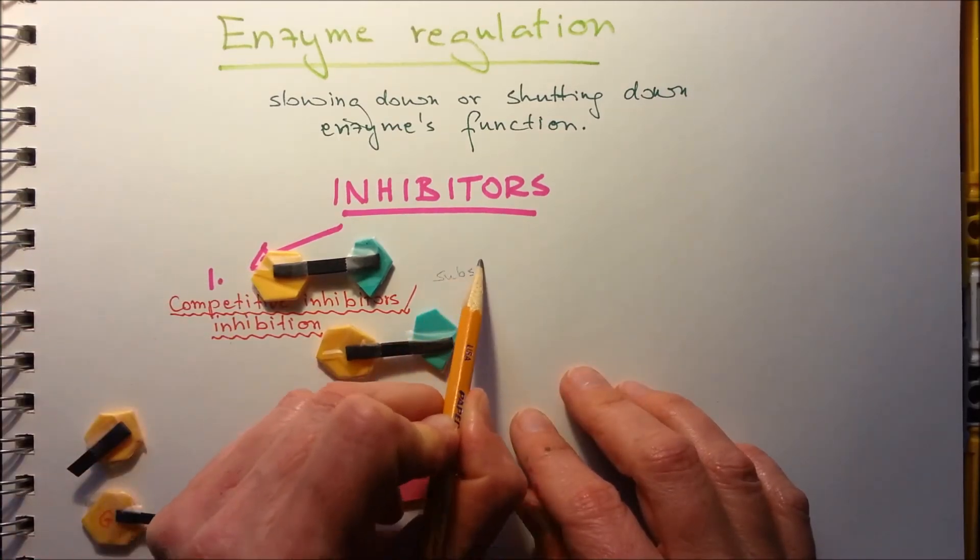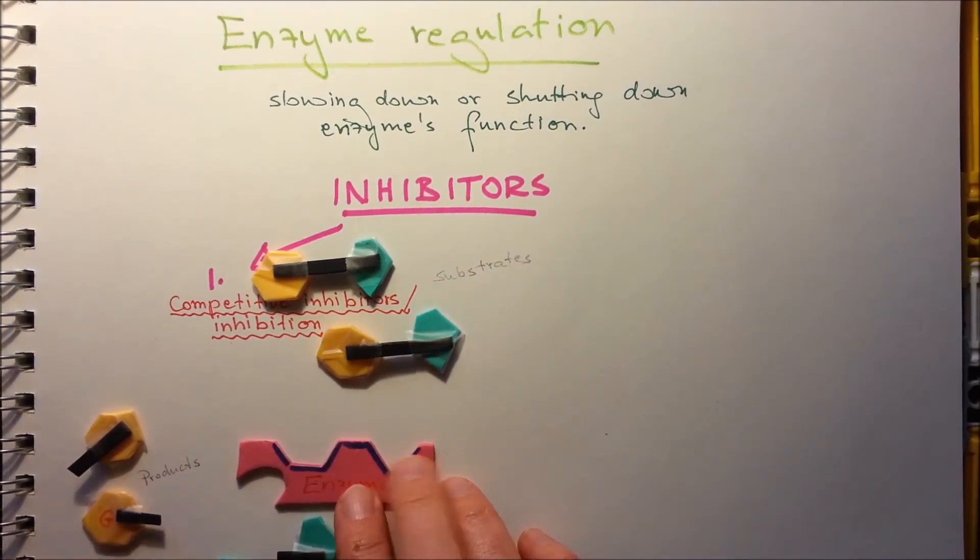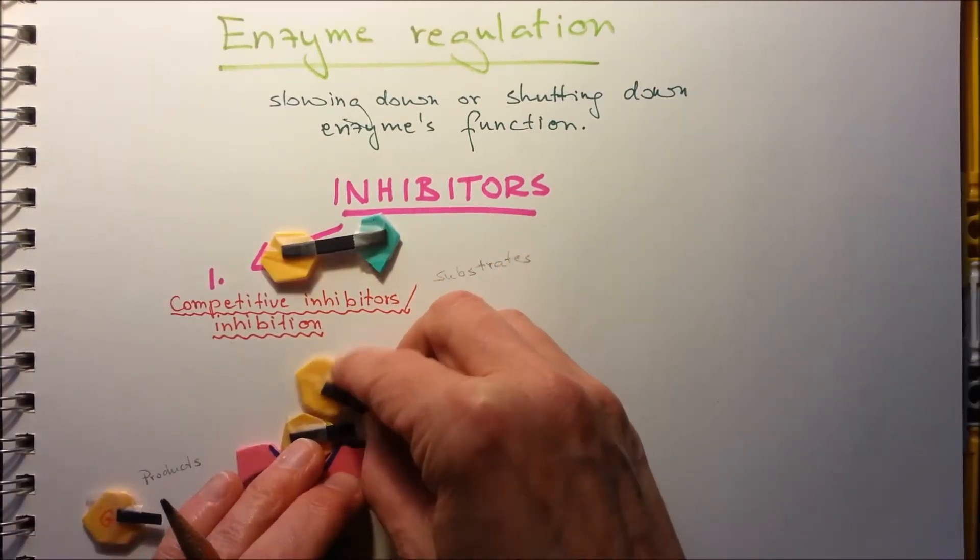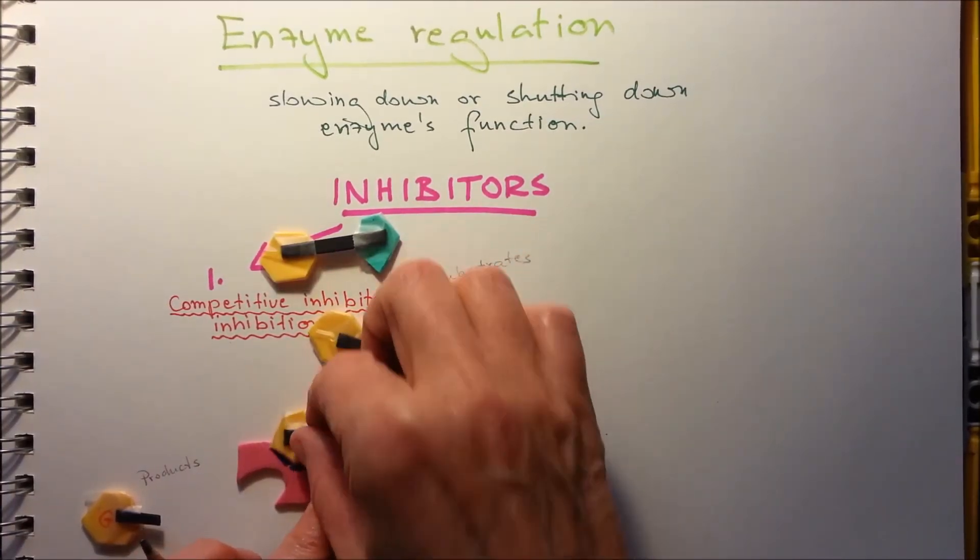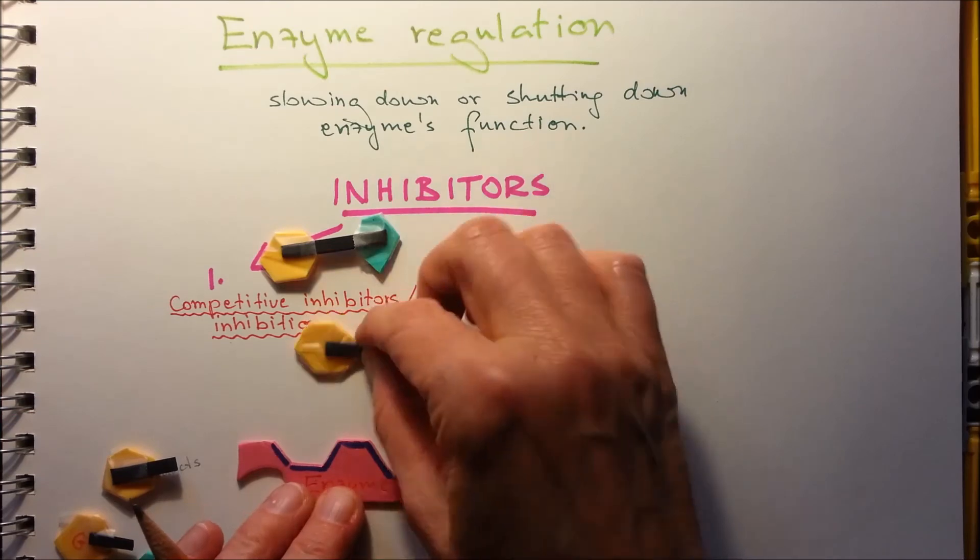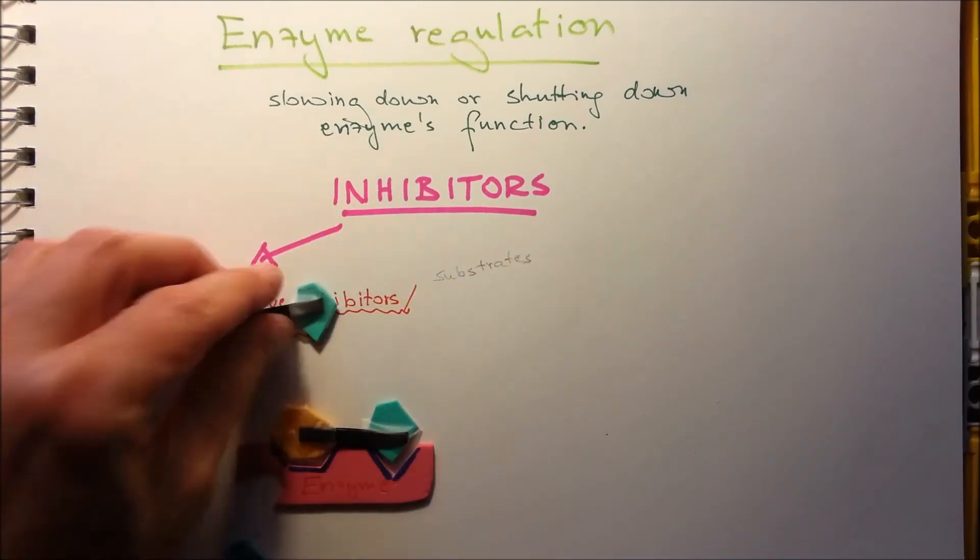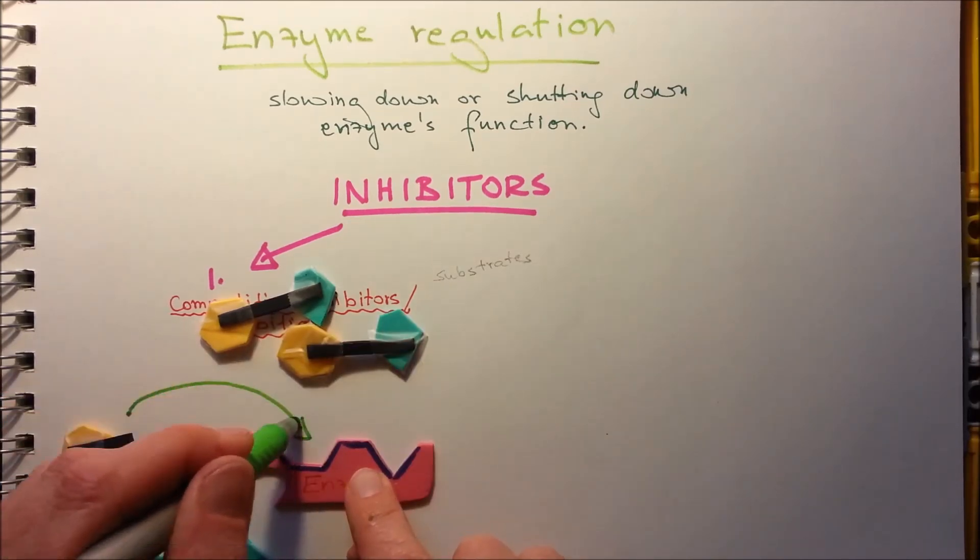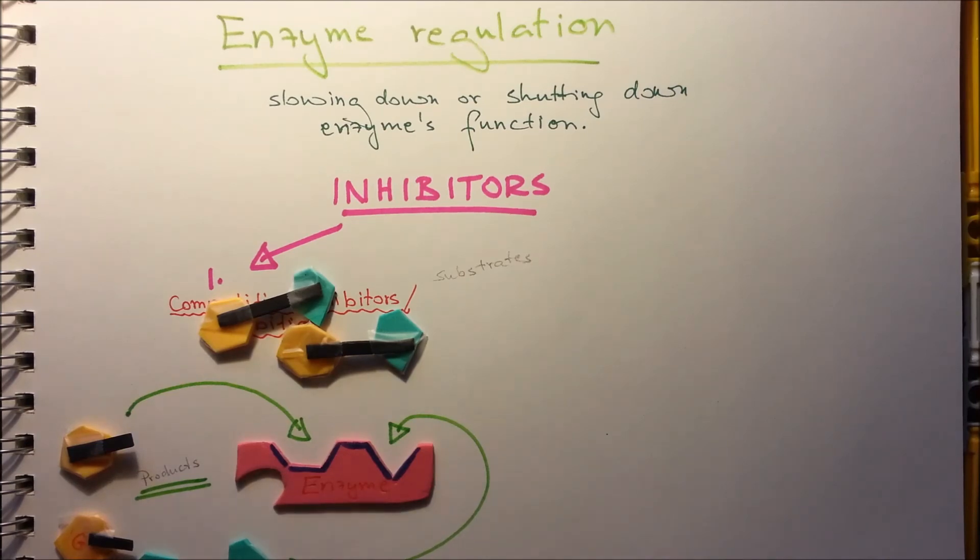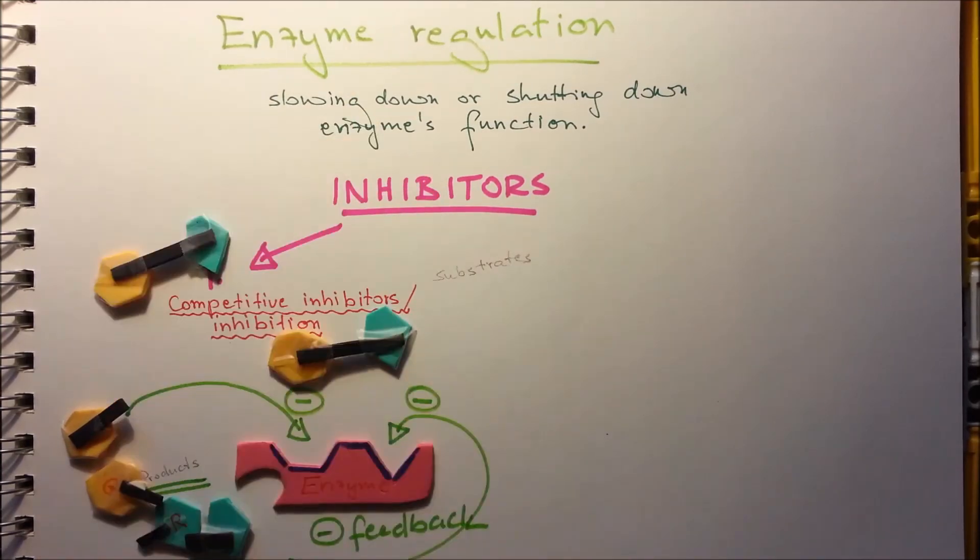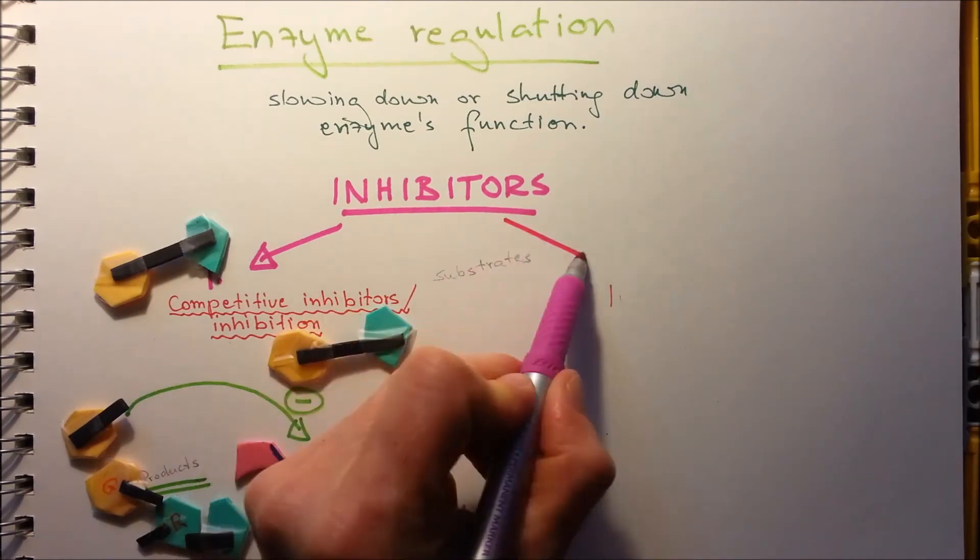Now, the product is going to sit into the active site. So in this case, no more substrate is going to be able to go through the chemical reaction with the help of the enzyme. If there's few products after that, the enzyme starts to work again and produce more products. This is a negative feedback where the product will block the enzyme's activity.